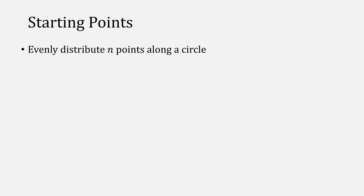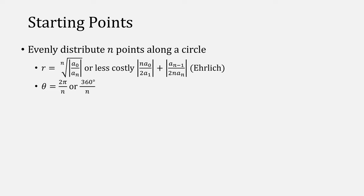We start the problem of picking starting points, which I sort of breezed over. The best policy is to evenly distribute n points along a circle, using this expression for r given by Ehrlich. You slice up the circle in 2pi over n, or 360 over n if you'd prefer degrees.